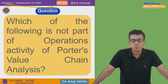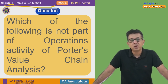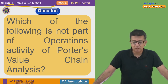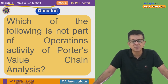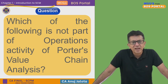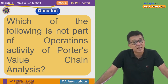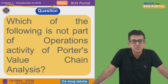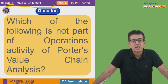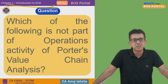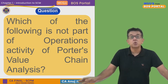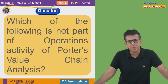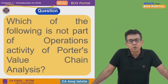Okay, let's start. Which of the following is not part of operations activity of Porter's Value Chain? This is Chapter 1, where value chain is most important. Porter's Value Chain states that manufacturing companies have five primary activities: inbound logistics, operations, outbound logistics, marketing and sales, and finally after-sales service. They are asking which one is not part of operations. Operations means core manufacturing.